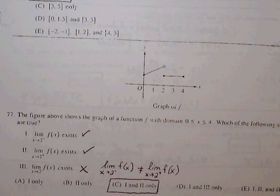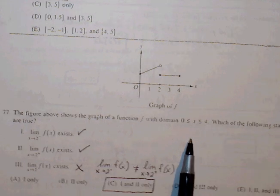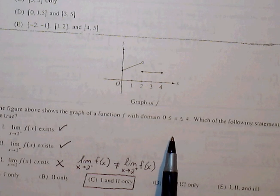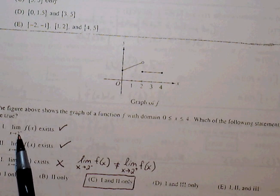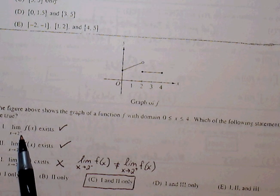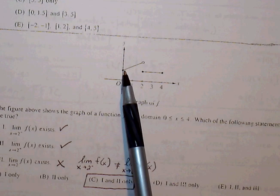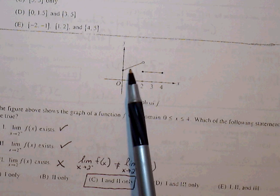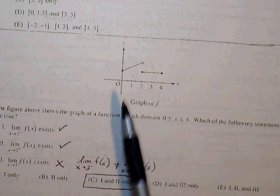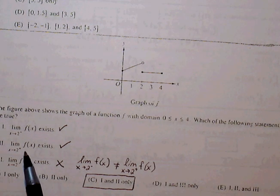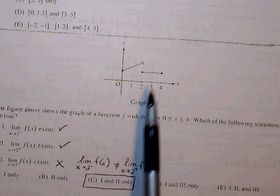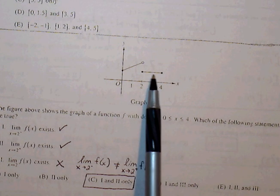77, the figure shows the graph of a function with domain where x is between 0 and 4. Which of the following are true? We see that the graph does approach a point from the left side. And the one-sided limit from the right side of 2 also exists.